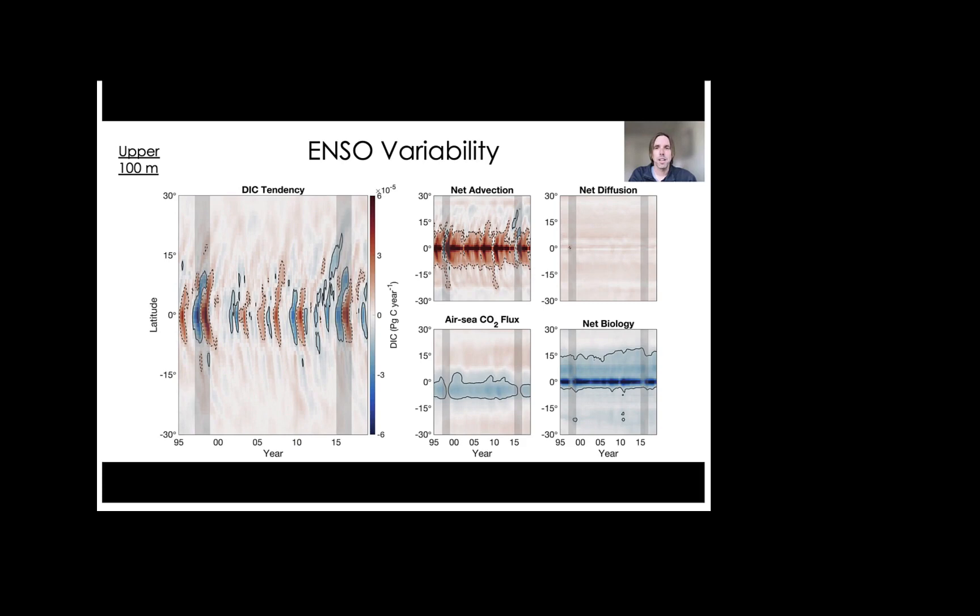So to wrap up this talk, I'm going to focus on the DIC budget in the Pacific Ocean, between 30 degrees south and 30 degrees north. Time is shown on the x-axis and latitude is shown on the y-axis. And the DIC budget here represents a zonal mean taken across the Pacific Ocean.